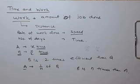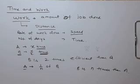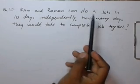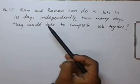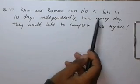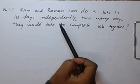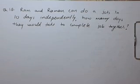Similar understanding we can develop with the help of some other problems also. In the given problem, Ram and Sam can do a job in 10 days independently. Then how many days would they take to complete the job if they work together?